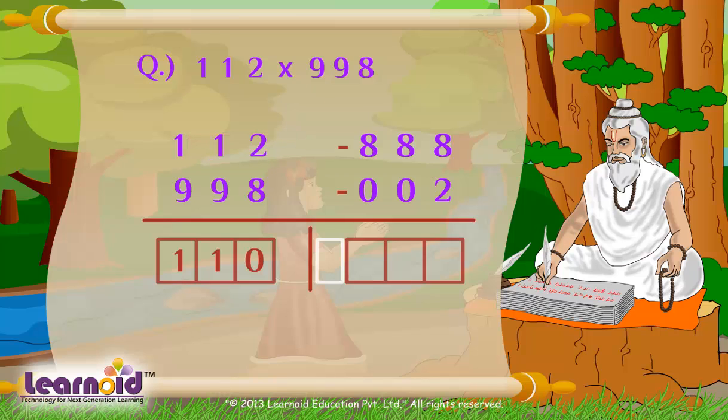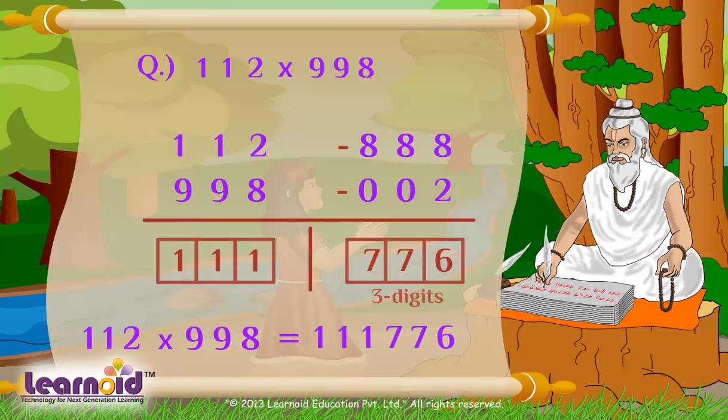Now multiply vertically. 888 into 2 equal to 1776. It is a 4-digit number. We will keep 3 digits and move carry to add with left side. So 112 into 998 equal to 111776.